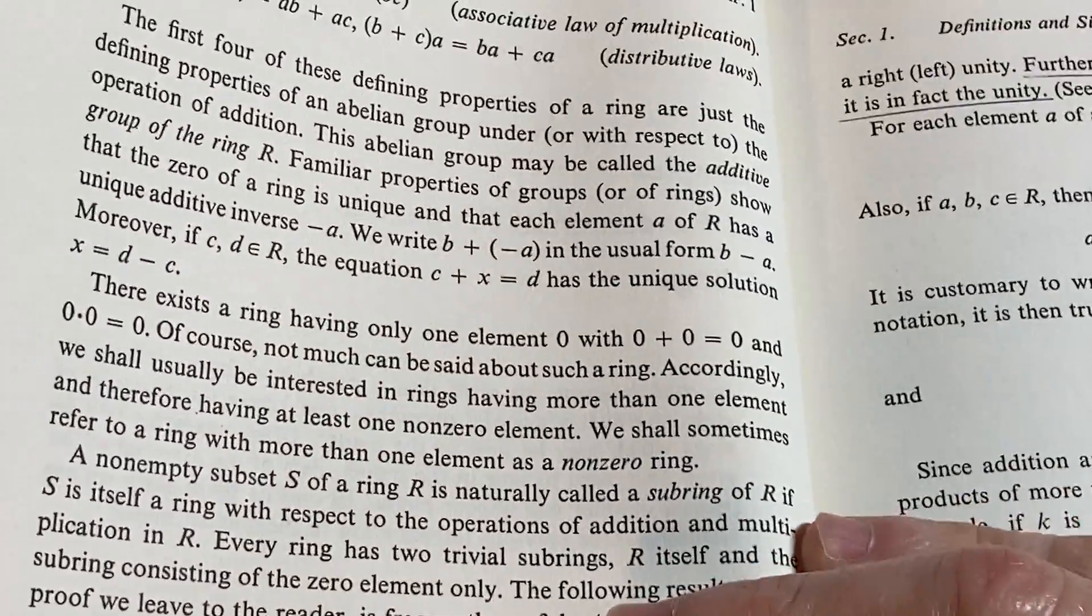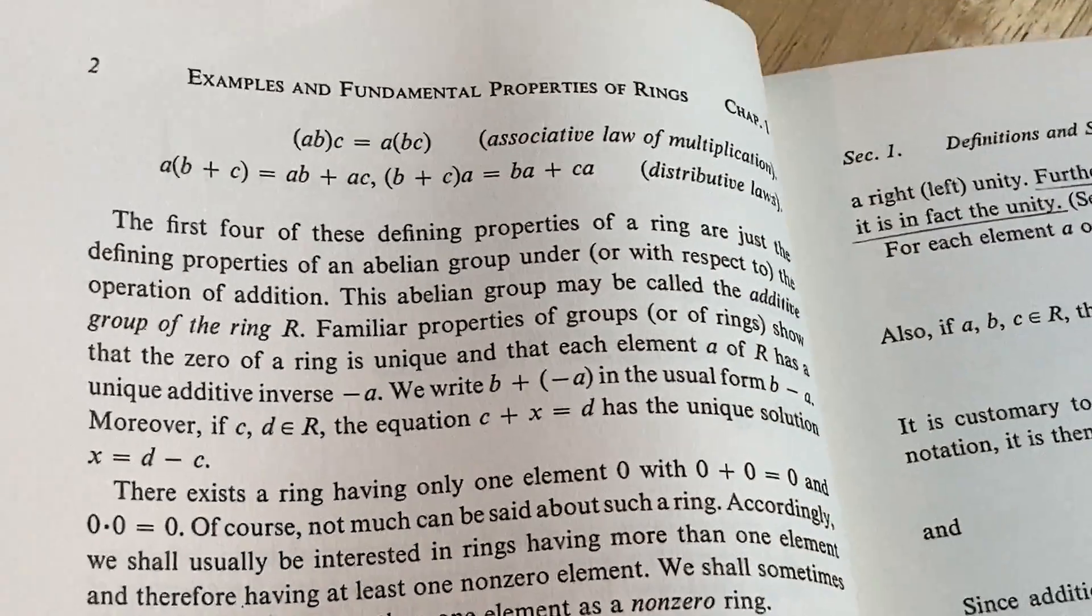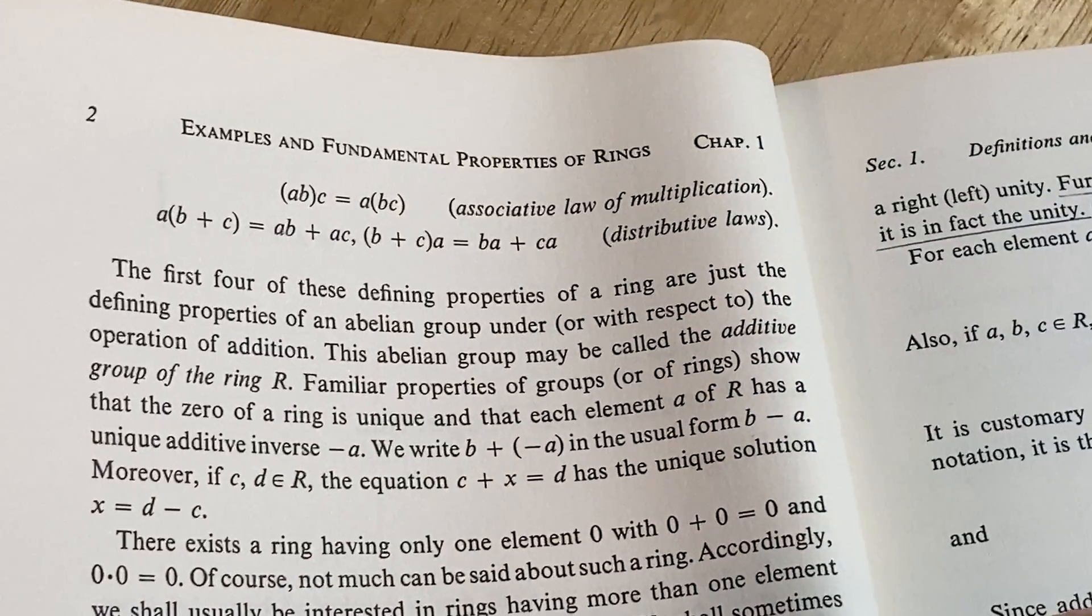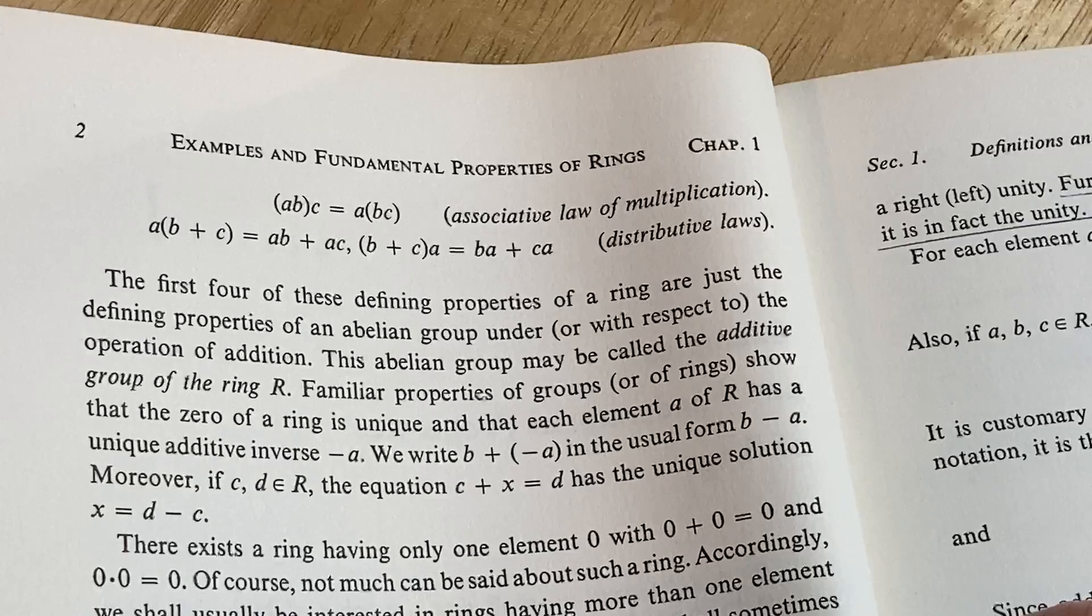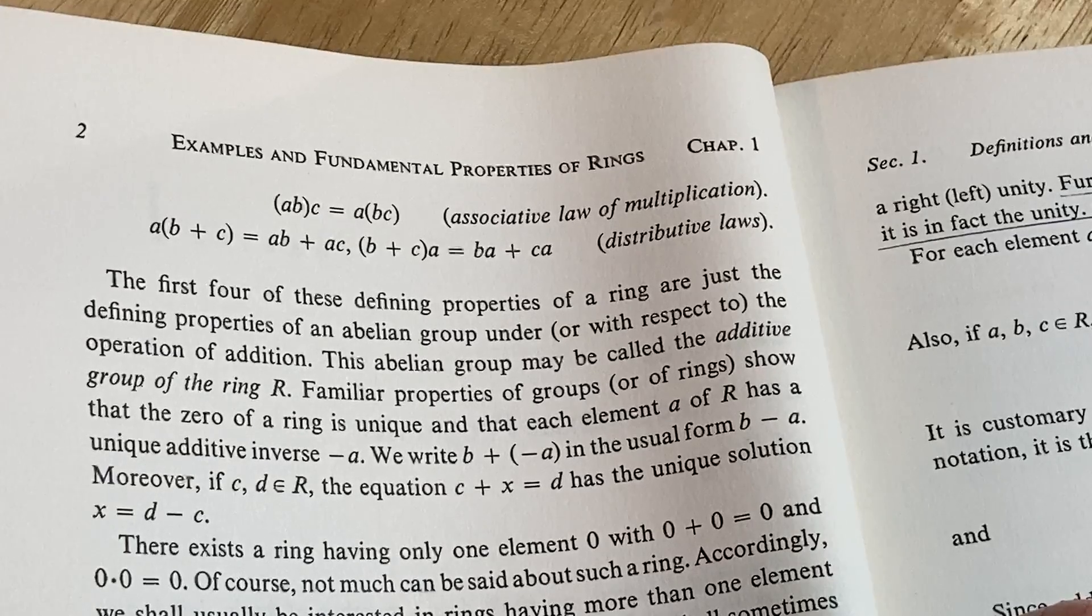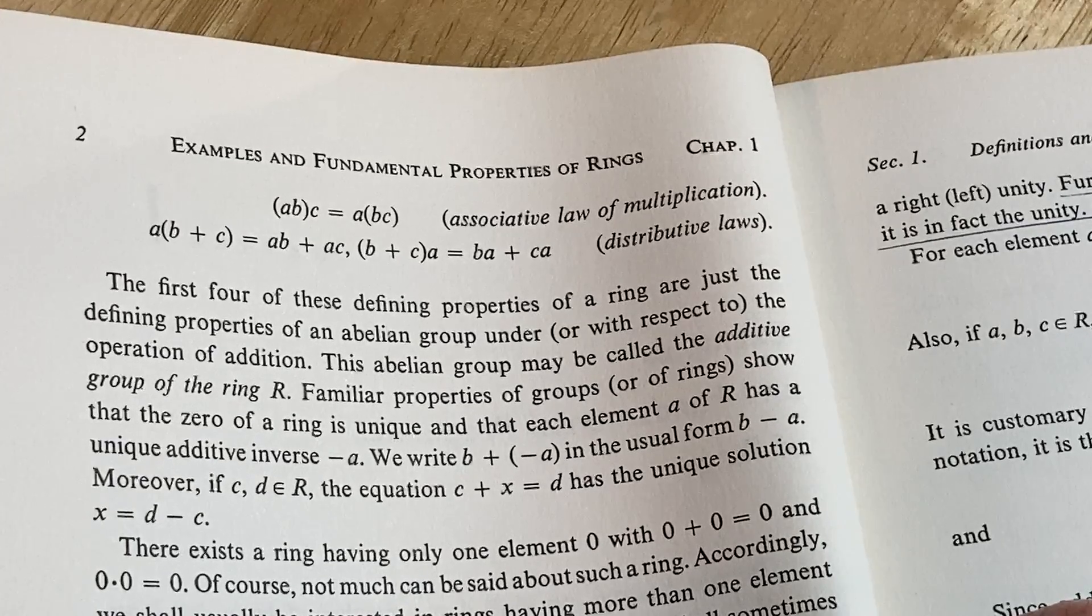What's it say here? The first four of these defining properties of a ring are just the defining properties of an abelian group, yes, or with respect to the operation of addition, correct. This abelian group may be called the additive group of the ring R, yep.